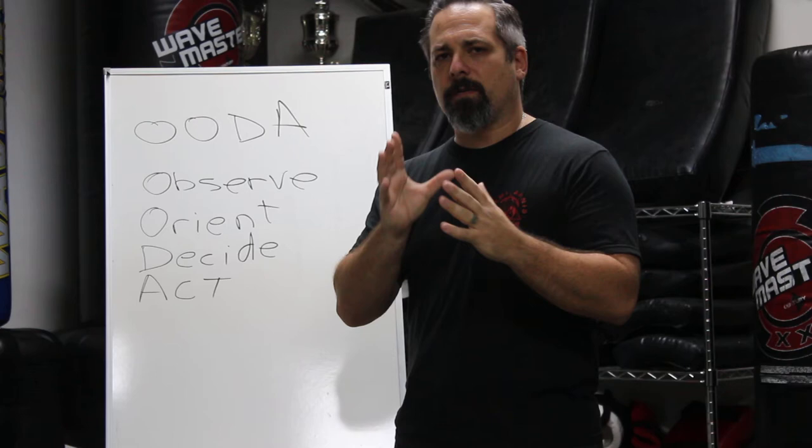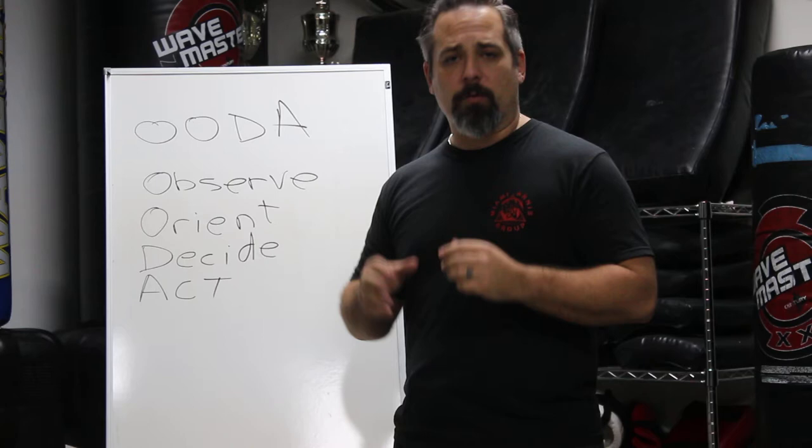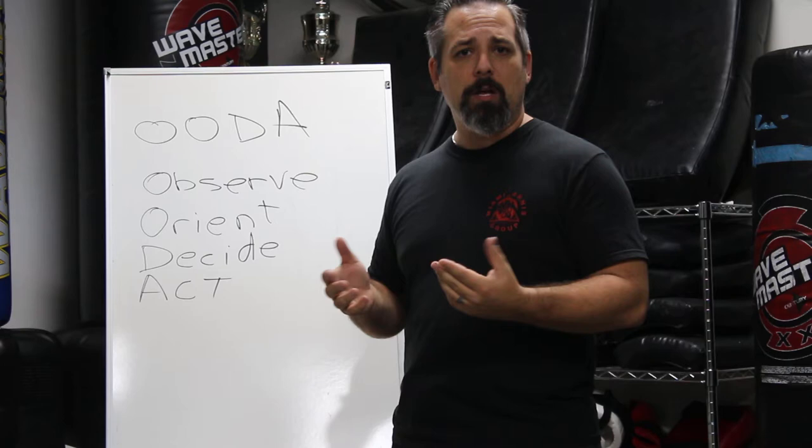Hey guys, welcome back. Today in class we're discussing some of the theoretical framework behind timing and the OODA loop came up. This is a cycle that we go through basically any time that we do anything. This was codified by Colonel Boyd and he would use it in reference to fighter pilots.